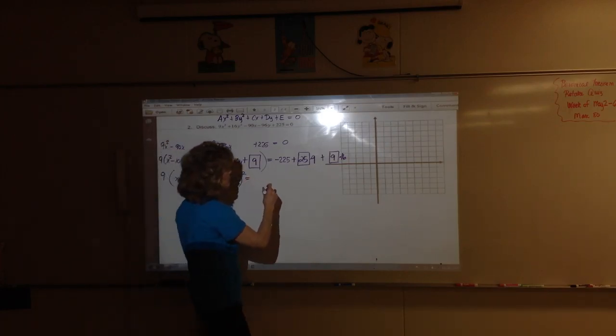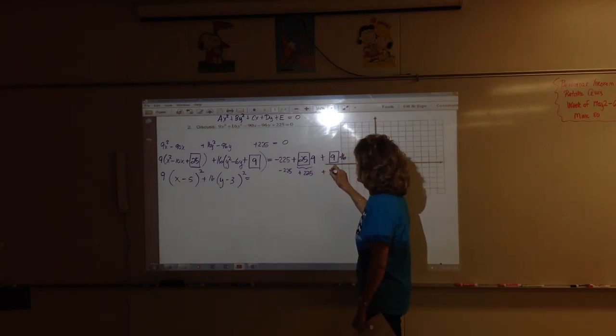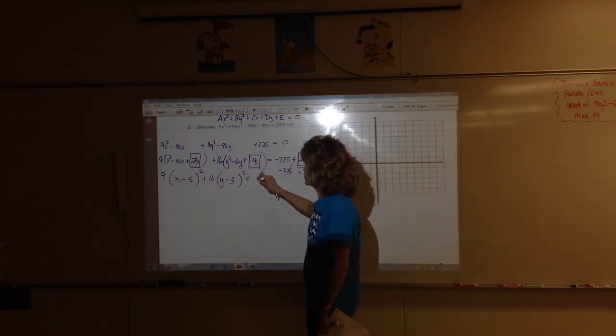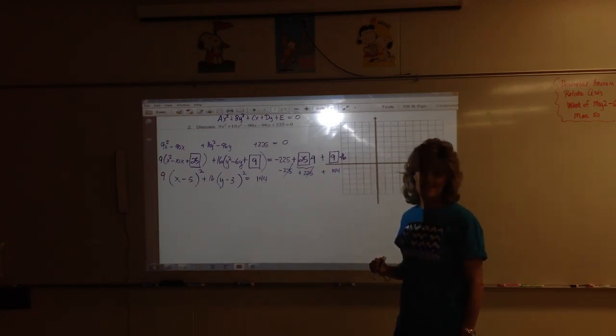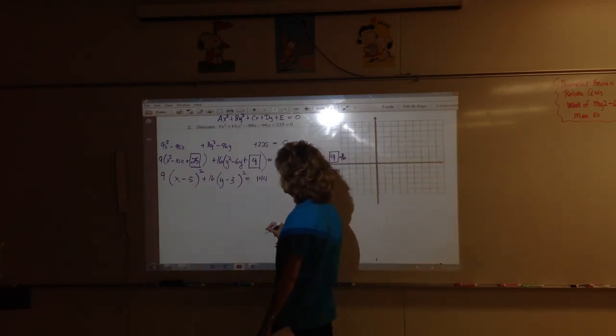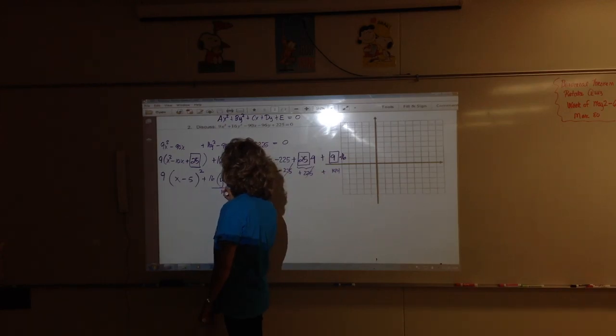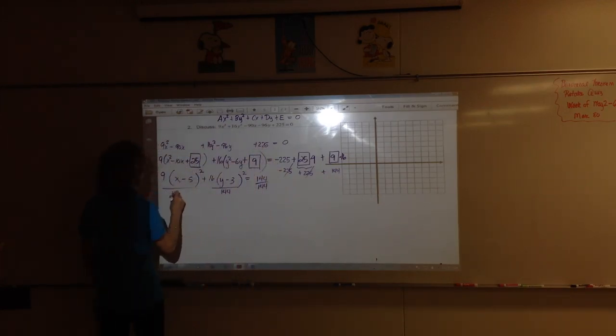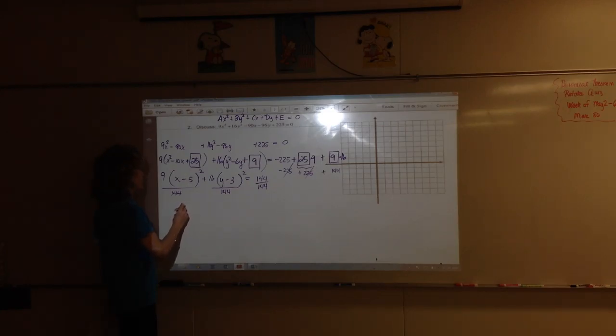So now you've got to remember how to factor a perfect square trinomial. It factors as something squared. What is the something? X minus 5. X minus 5 times X minus 5 will get us to here. And then 16 times Y minus 3 squared. Where do we land on the other side? Negative 225. So this is plus 225, this is 144, and the 225s go away. So on the right-hand side we just have 144.